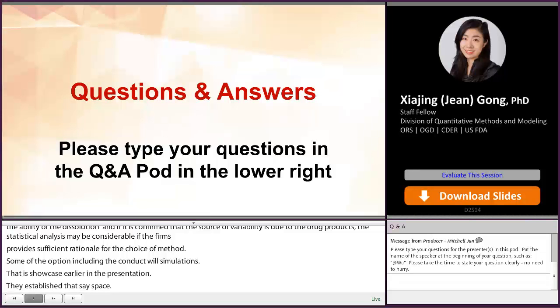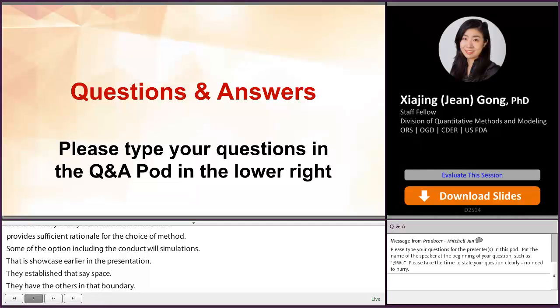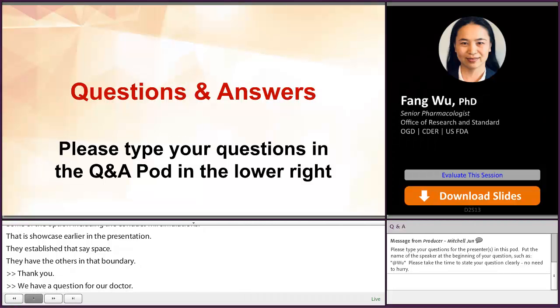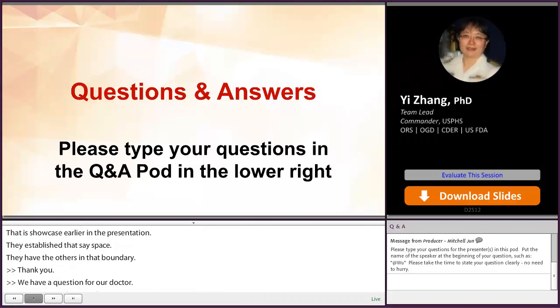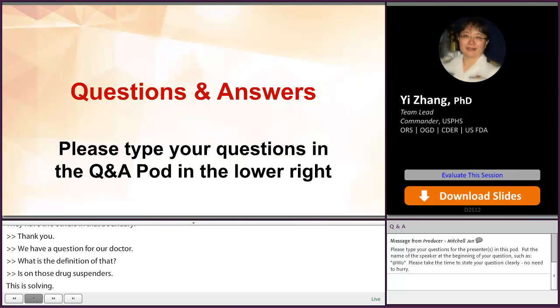And some of the options include conducting virtual BE simulations. For example, using PBPK modeling like Dr. Fang Wu showcased earlier in her presentation to establish the bioequivalent dissolution safe space. And evaluate whether the dissolution profiles fall within that safe space boundary. We have a question for Dr. Zhang. What is the definition of very rapidly dissolving? So, for BCS-3 drug substances, they have to meet very rapidly dissolving. The spec is not less than 85% in 15 minutes. And it has clearly been delineated in BCS guidance as well.